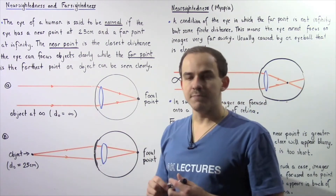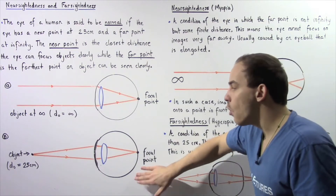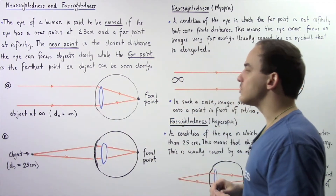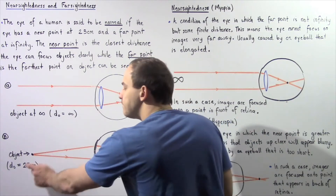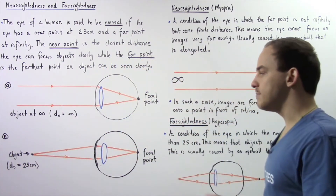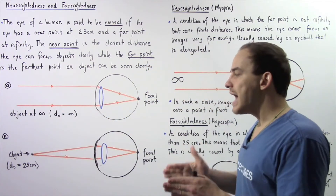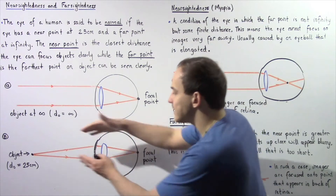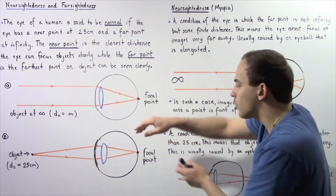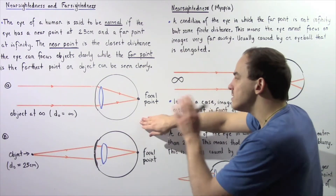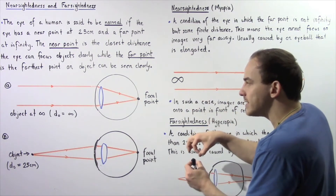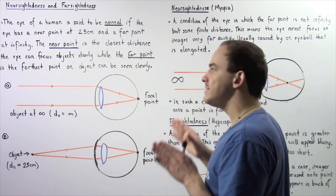Now let's examine Diagram B. Diagram B essentially describes the normal eye that is viewing an object found close to our eye. Let's suppose that the object is found 25 centimeters from the cornea and the lens of the eye, so the object distance is 25 centimeters. When the rays of light bounce off our object and reach the cornea and the lens, they will refract and will focus and converge onto the focal point, which is found once again on the retina. So in both cases, our image will be focused onto a single point and the object will be seen clearly.